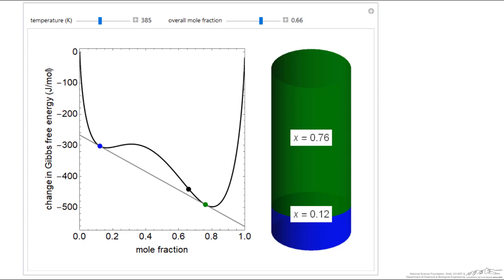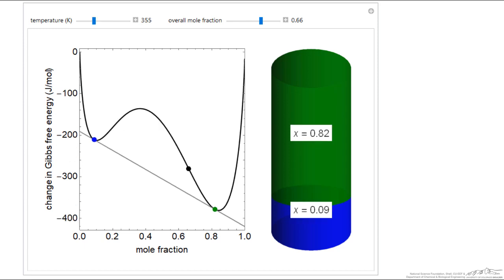So, the lever rule can be used to determine how much we have at each phase along this tangent line, and lowering the temperature increases the excess Gibbs free energy. The liquids mix even less as we lower the temperature and we get more phase separation.